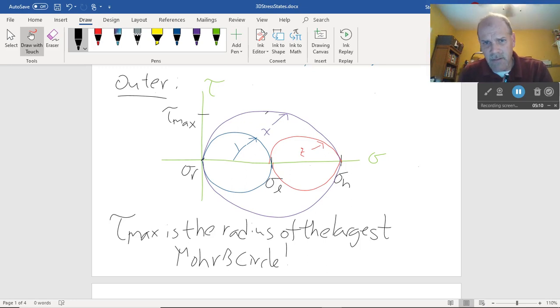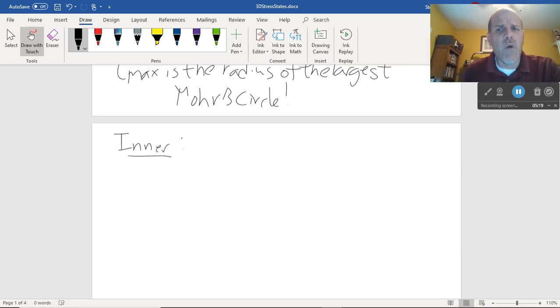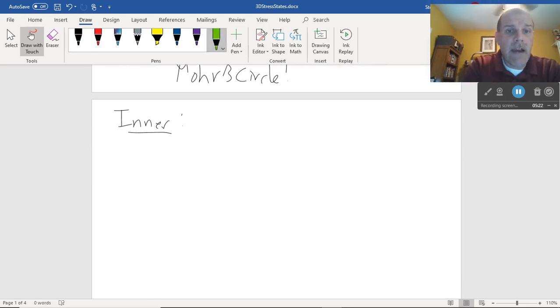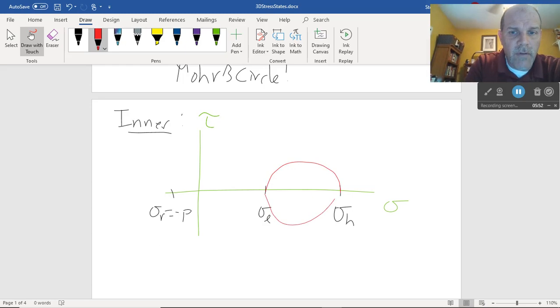Now let's look at the inside surface. I'm going to start with the inner here. And almost everything's the same. I only have one little change that turns out to be a relatively big change. Here's sigma, here's tau. Same deal. Here's the hoop stress. The longitudinal is halfway between the hoop and zero.